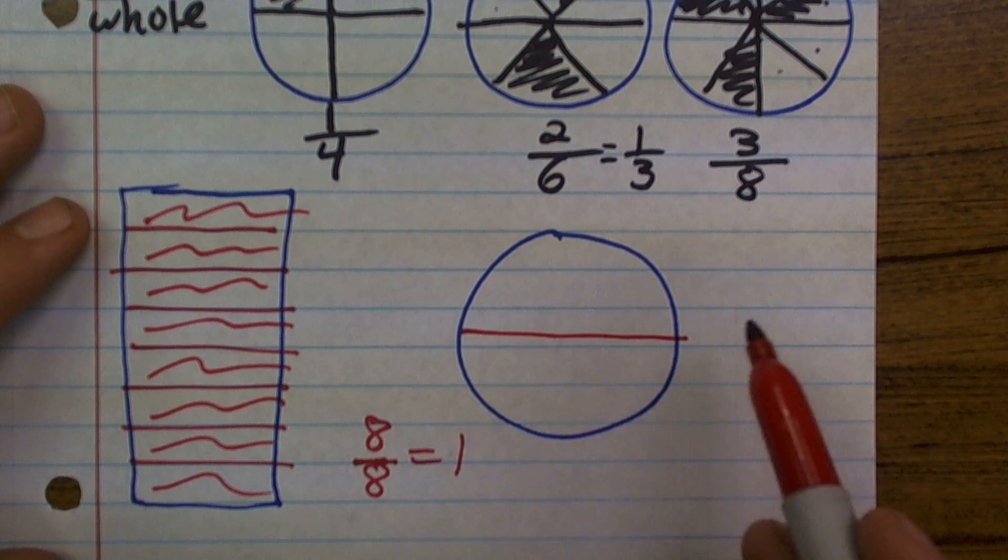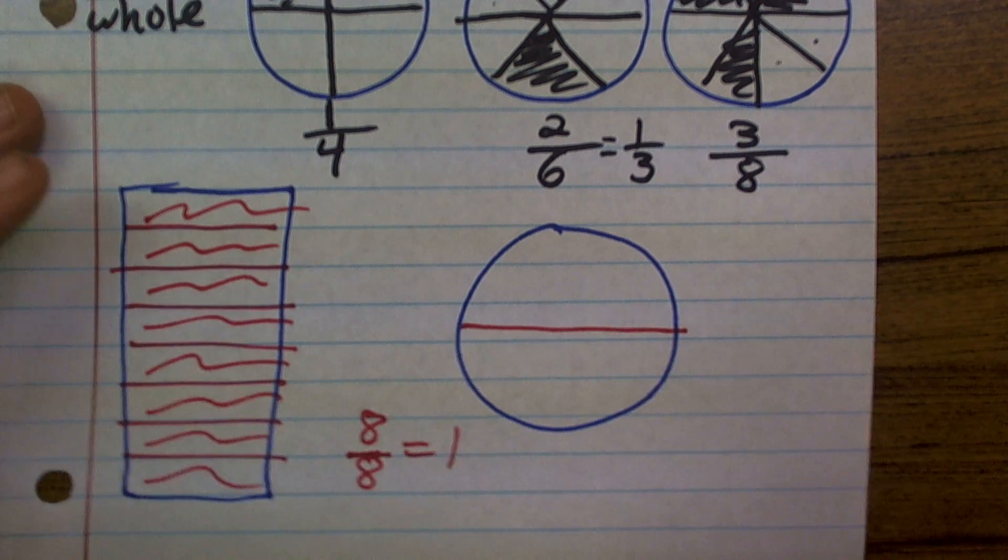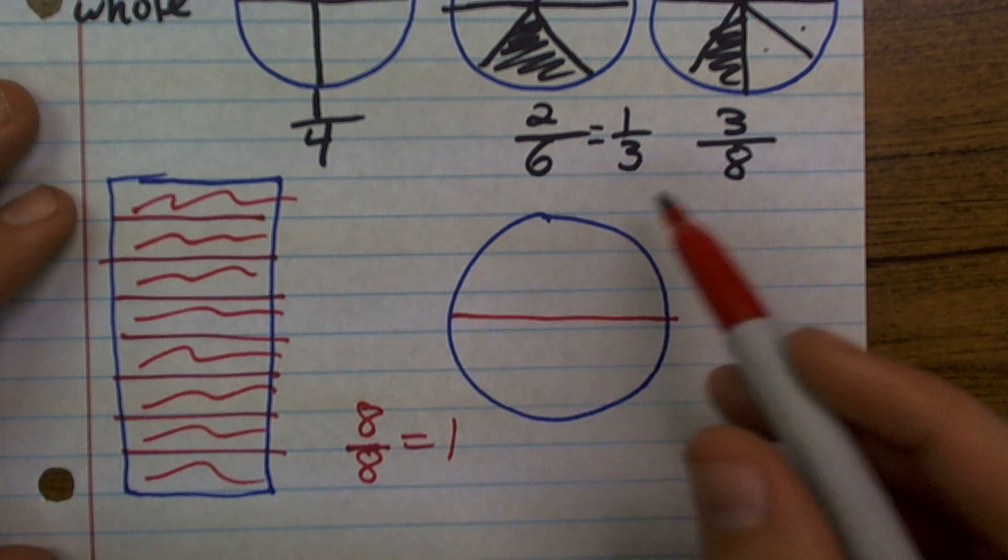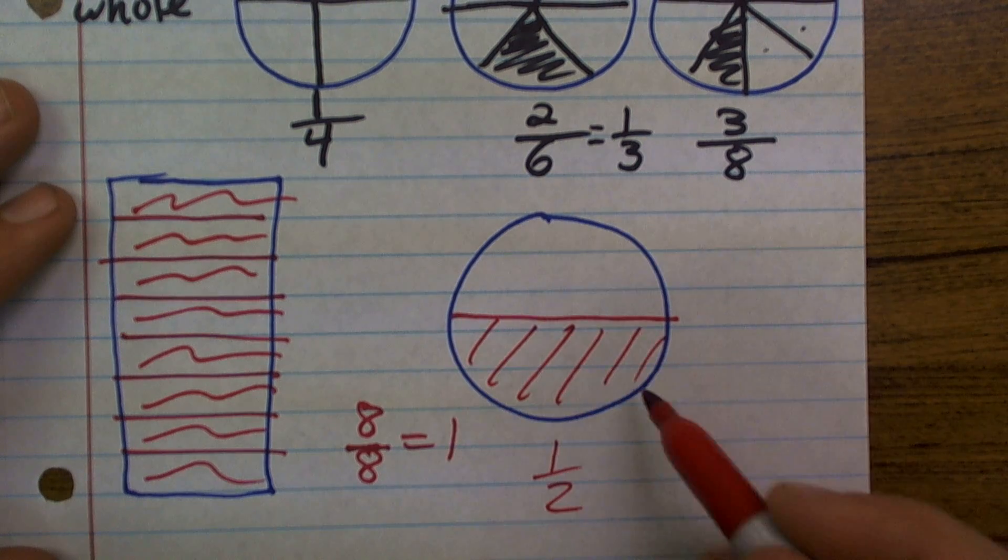So just to take a look at another example here, let's just take a look at one half. So right now, what you can say is I have chosen one half.